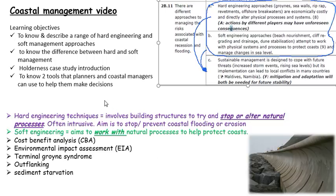I'm going to kick off with definitions. Hard engineering involves building structures to try and stop or alter natural processes. It's often intrusive and its aim is to stop or prevent flooding and erosion. So it's working against natural processes like longshore drift, mass movements, and erosion.